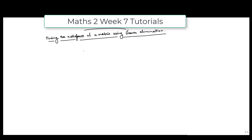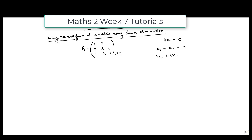Let us consider the matrix A to be [1, 0, 1; 0, 2, 4; 1, 2, 5]. This is a 3×3 matrix. The corresponding homogeneous system of linear equations Ax = 0 will be: x1 + x3 = 0, 2x2 + 4x3 = 0, and x1 + 2x2 + 5x3 = 0.